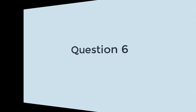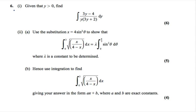Question 6, Part i says: given that y is greater than 0, find the integral of (3y-4) over y times (3y+2) dy.